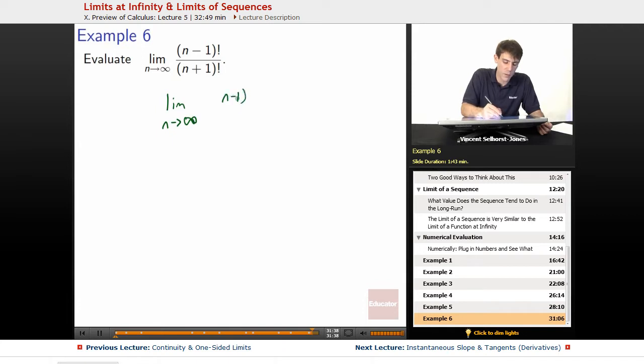So we've got (n-1)! on top, (n+1)! on the bottom. Well, that's going to be (n+1) times 1 less than that, which is going to be n times 1 less than that, n-1 times 1 less than that. Well, if we keep going down forever, that's going to be (n-1)! here. So we've got (n-1)! on the top and (n+1) times n times (n-1)! on the bottom.